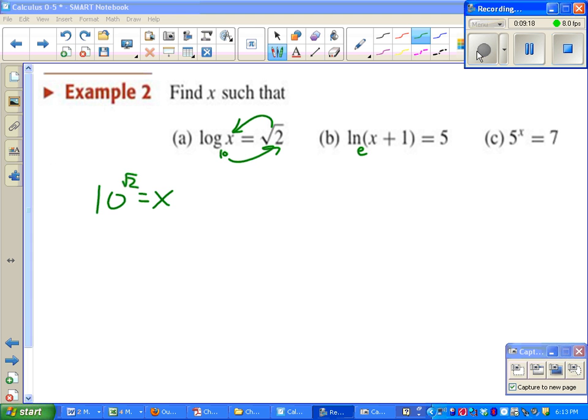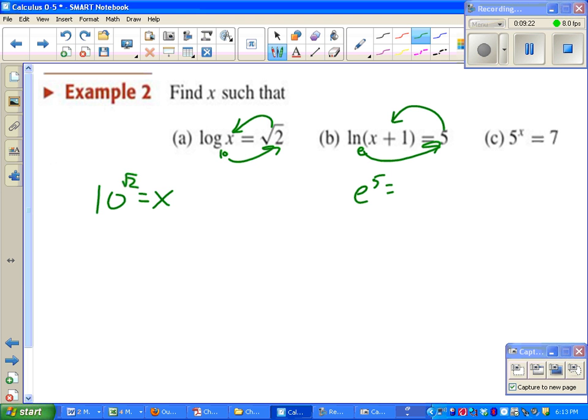Part b is pretty straightforward too. Using that inverse property, e^5 = x + 1. This time we're not quite done yet. We haven't solved for x. Algebra 1 students will be able to tell you just subtract 1 from both sides and they'd be right. Again, we could get this as a decimal using our calculator, but it doesn't tell us to down to a decimal, so I'm not going to.